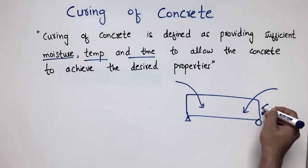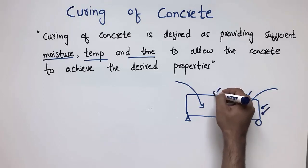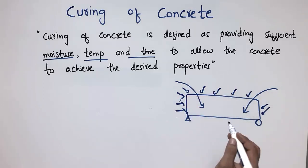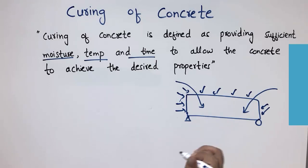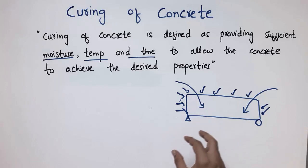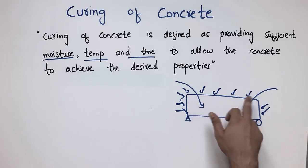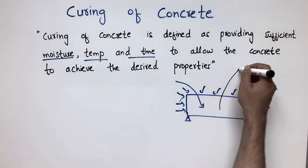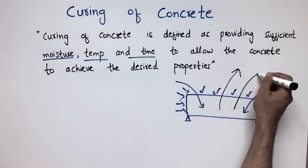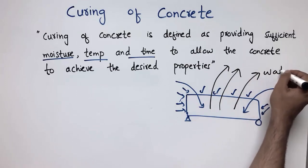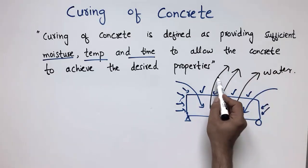and the surface of this beam each day. Why? Because we don't allow the water to move outside from this beam. Usually, when you don't provide the water on the surface of this beam, the water from inside of the beam will try to evaporate, and we want that